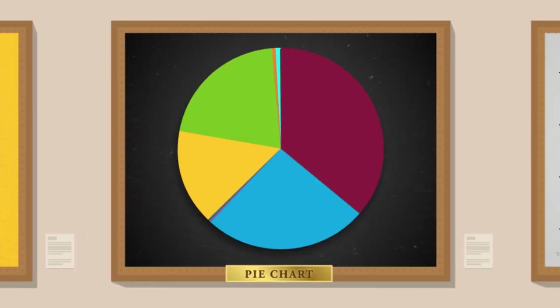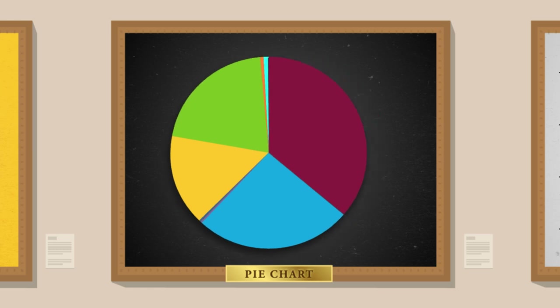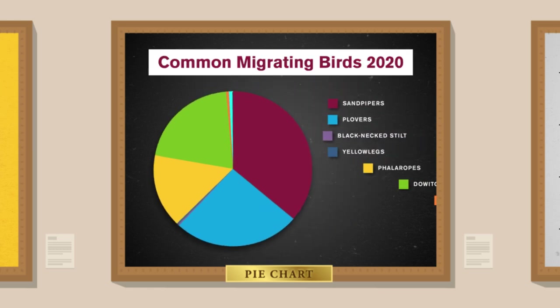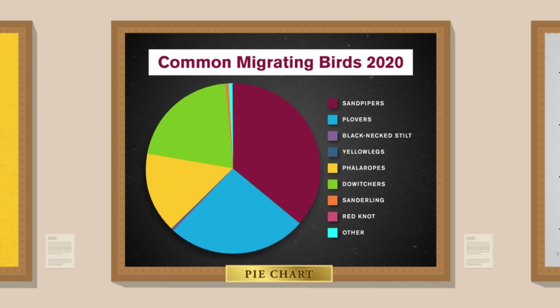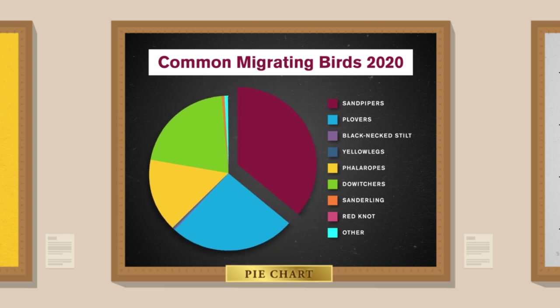In a pie chart, we forget about time and instead focus on stories about proportions, or parts compared to the whole. If we wanted to tell a story about all the types of migrating birds, the whole pie chart represents the total number of birds, while each slice shows how much each species contributes. Those sandpipers are going for the biggest piece!